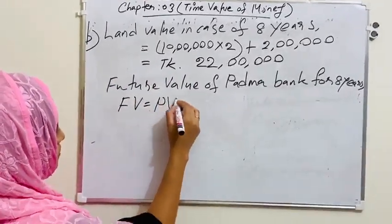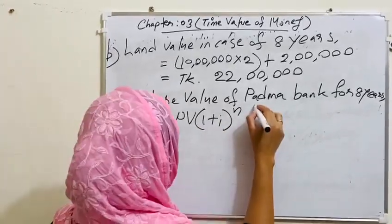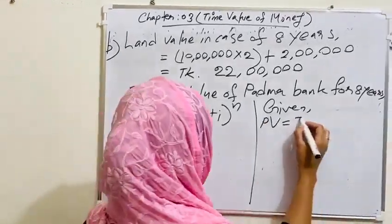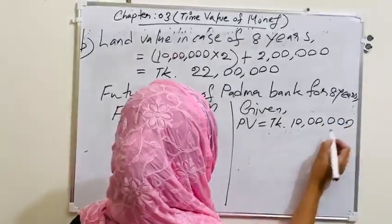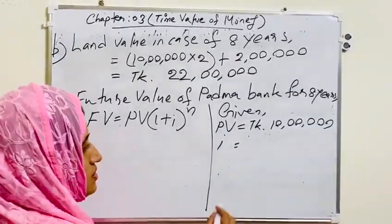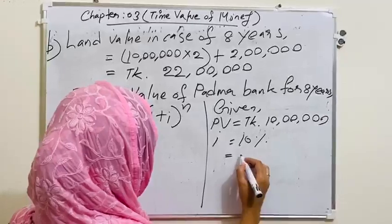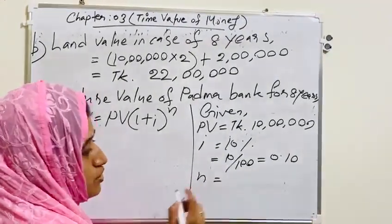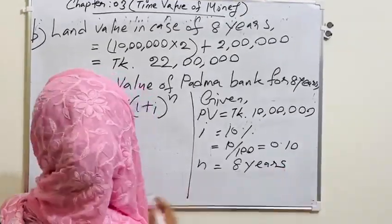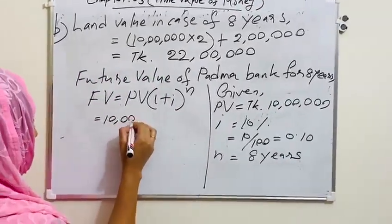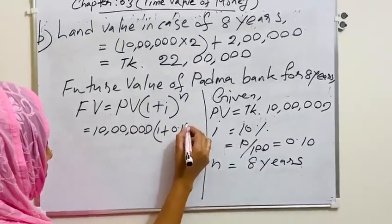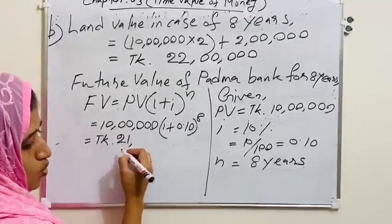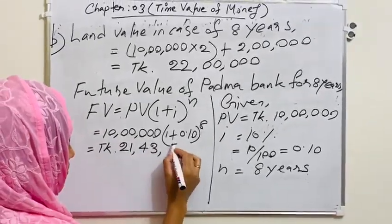Again, we will have to calculate the future value of Padma Bank. Because at first we will calculate the future value of Padma Bank for 8 years for comparing the land value. So FV equals to PV into 1 plus I to the power N. The given: PV equals to 10 lakhs, I equals 0.10, and N equals to 8 years. So 10 lakhs into 1 plus 0.10 to the power 8. By calculating this, we will get Taka 21 lakhs 43,580.